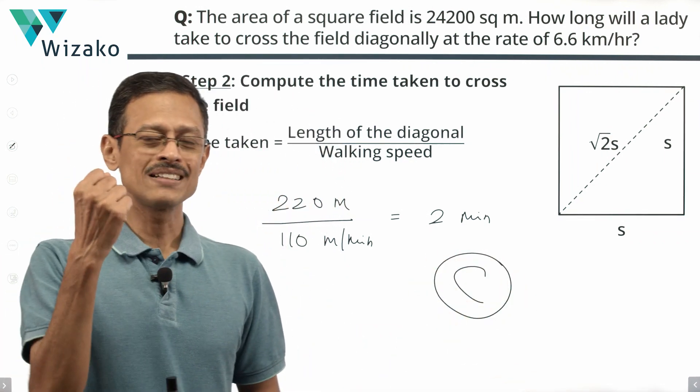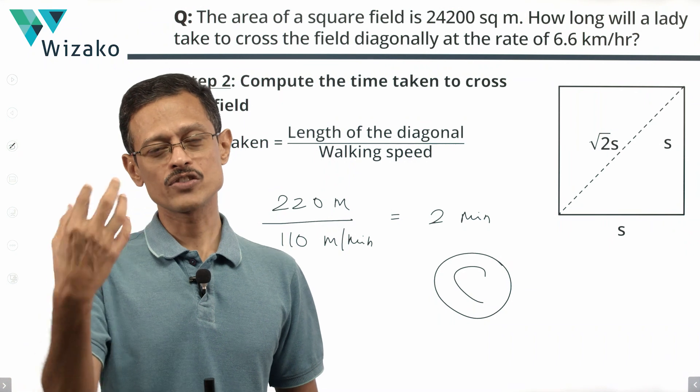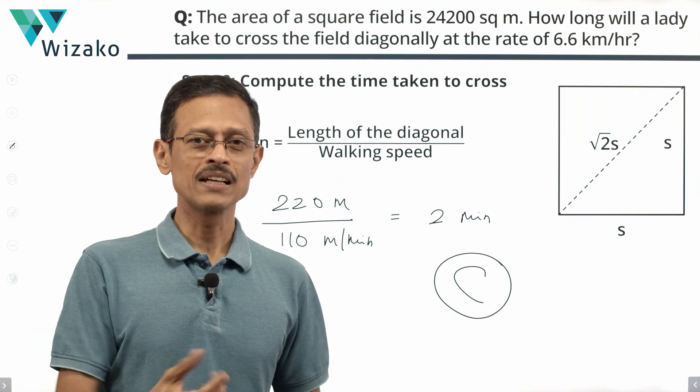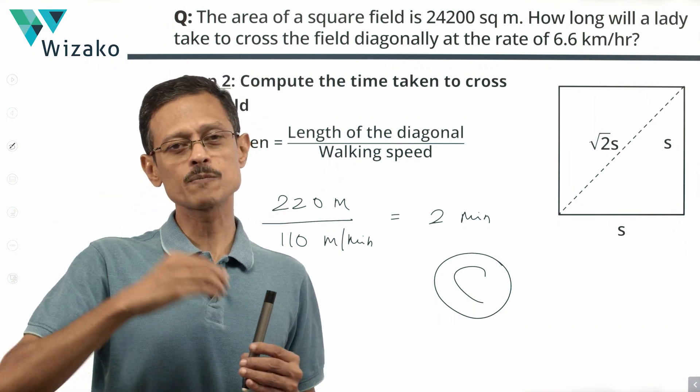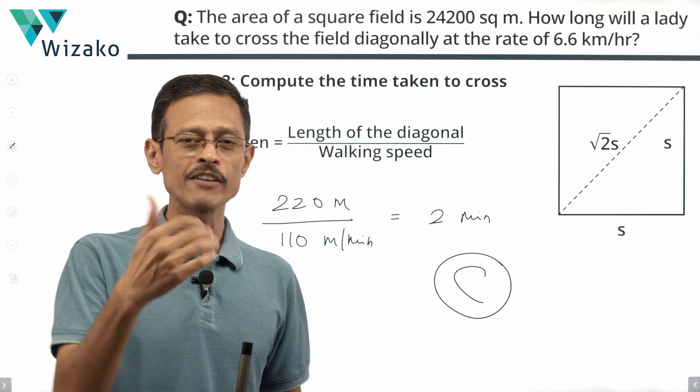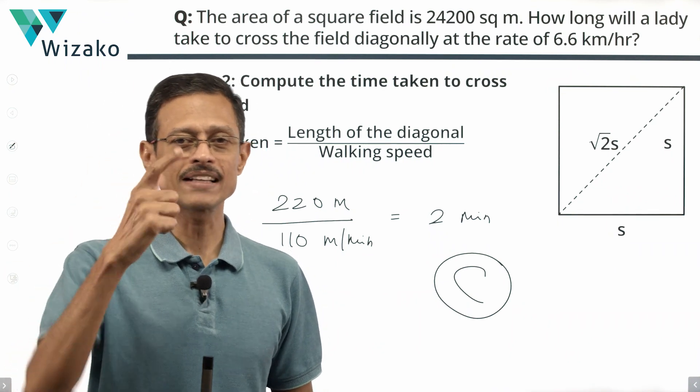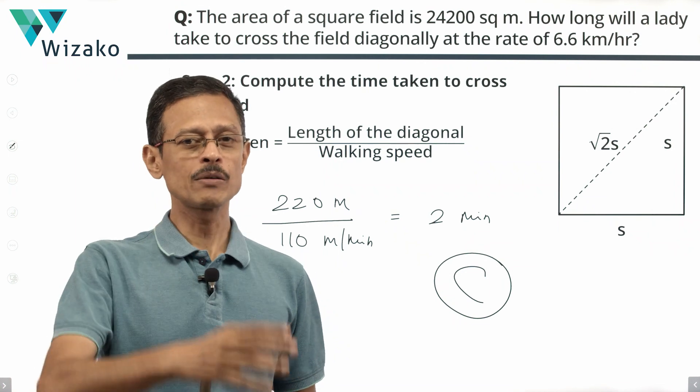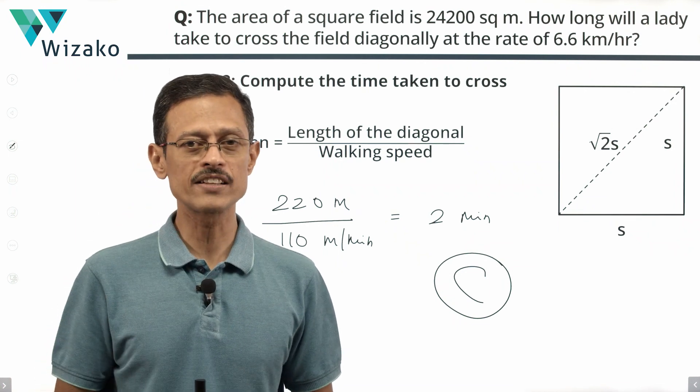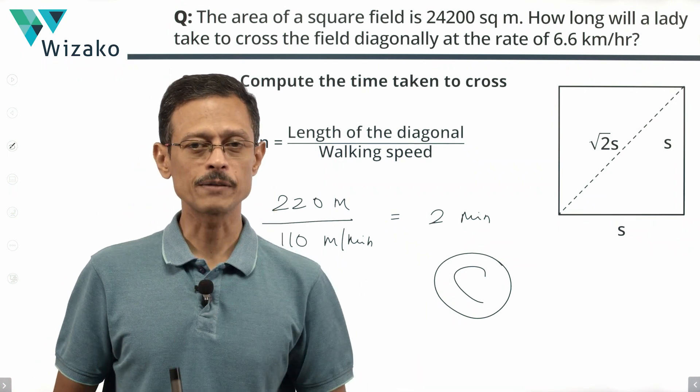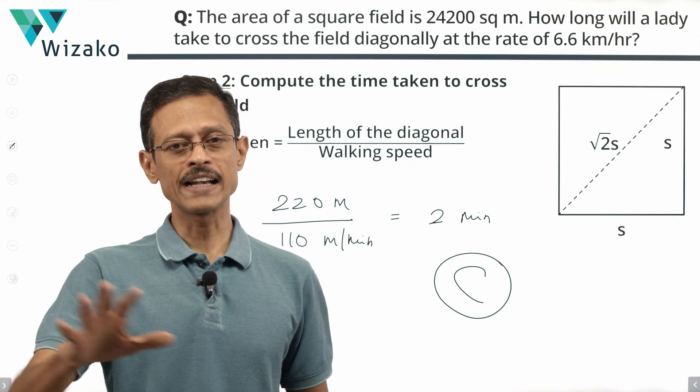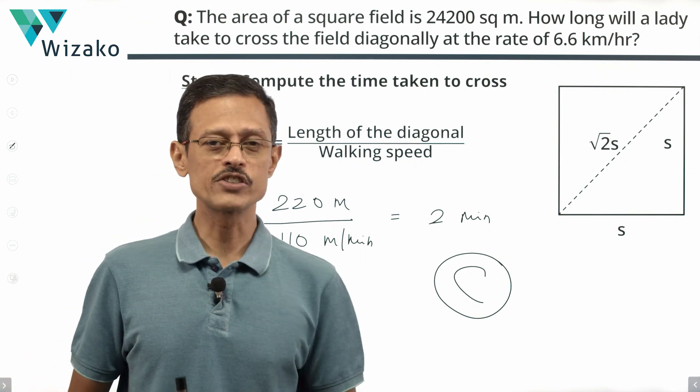So three parts as I mentioned. One, basics about area of a square and finding out the diagonal of the square. And within that a way to spot a perfect square. 24,200 is 2 times 12,100, which makes that calculation easy. From there we moved on to understanding basics about speed, distance, time. Time equals distance by speed. Lastly converting units and finding out the answer. Best wishes for your GMAT preparation.